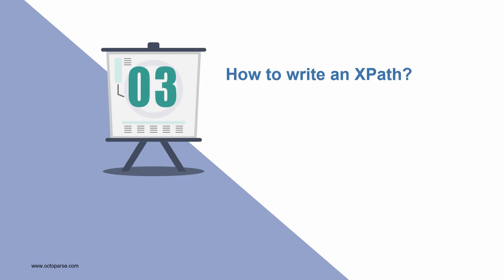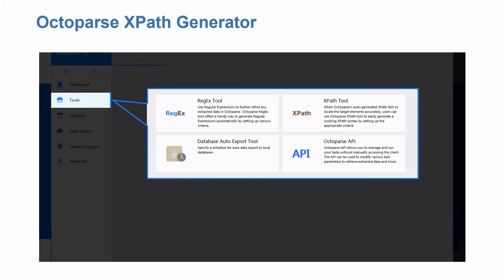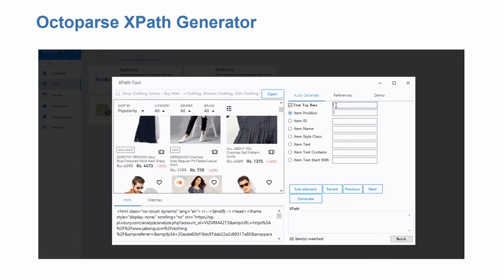How to write an XPath? First, Octoparse has an XPath generator, which is super easy for people with basic HTML knowledge. You can easily find the XPath tool in the Tools box. It gives you a hassle-free web scraping experience. You don't need to worry about whether you write the correct expression. All you need to do is set the criteria by copying and pasting, and Octoparse will generate the XPath accordingly.